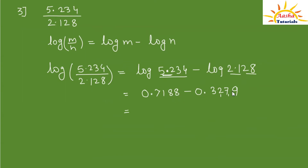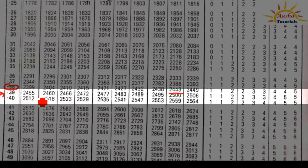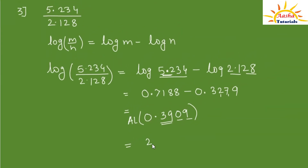Subtracting the two logs gives 0.3909. We find the antilog of 0.39 in the 0th column, which is 2455, and mean difference in the 9th column is 5. Adding gives 2460. The characteristic value is 0; adding 1 gives positive 1, so the decimal point goes after 1 digit. The final answer for 5.234 ÷ 2.128 is 2.460.